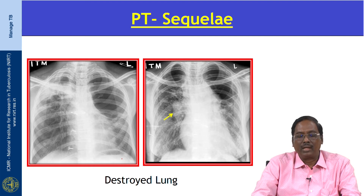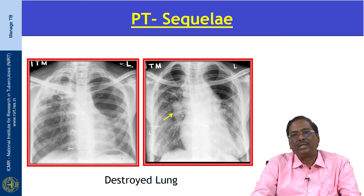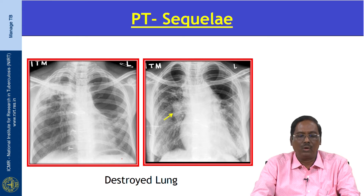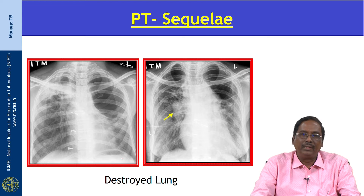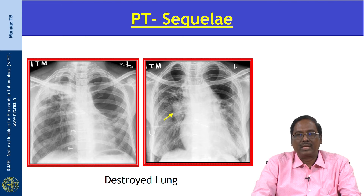What is destroyed lung? Destroyed lung is defined when more than two-thirds of the lung tissue has been replaced by cavity or fibrosis. There is complete destruction of the whole lung or a major part of the lung. It occurs in primary progressive TB and also post-primary TB due to secondary infections.